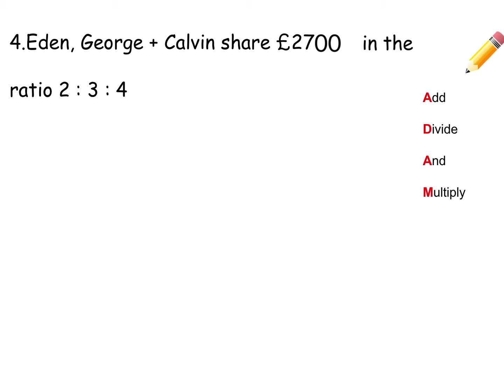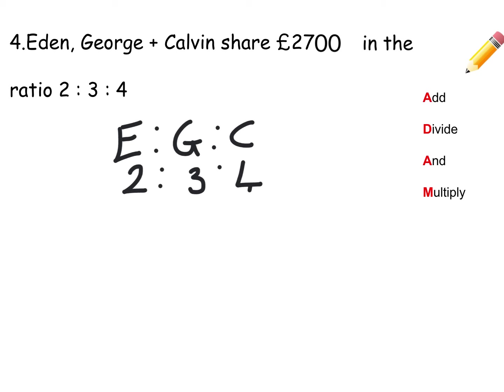For my final example, I'm going to show that this works exactly the same whether you have two or three people in the question. This time we've got three people: Eden, George, and Calvin. They are sharing £2,700 in the ratio 2 to 3 to 4. When we add up our 2, our 3, and our 4, that gives us 9. So we divide by 9: 2,700 divided by 9 is 300.